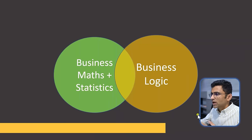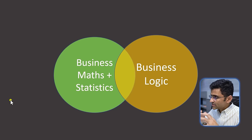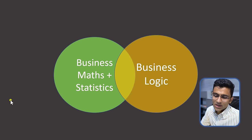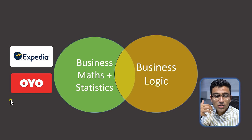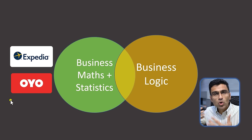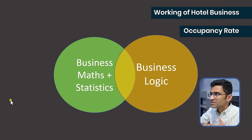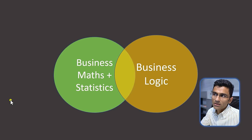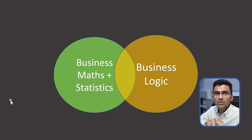If you look at this diagram, what I have shown is the intersection between business math and statistics and business logic. By business logic, I mean — let's say you're working as a data analyst or data scientist at Expedia or OYO Rooms, which are hospitality domain companies. Then you need to have some domain understanding: how hotel bookings work, what is occupancy rate, what is booking capacity. That falls under business logic, something business managers typically do, but as a data professional, you also need some understanding of the domain and business side.